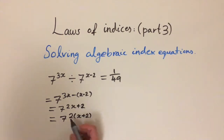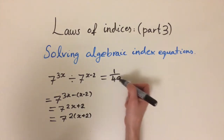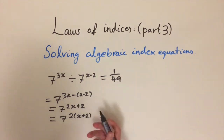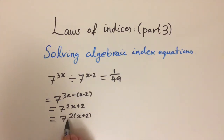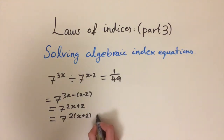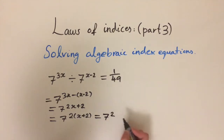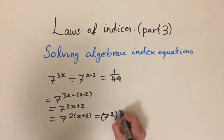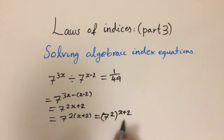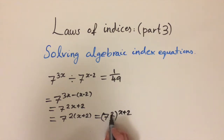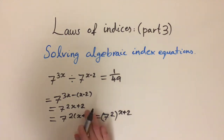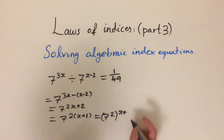We want to get to something that looks like 49, and we can see that 7 squared equals 49. So we use the law of multiplication in reverse: we can write this as 7 squared in brackets raised to the power of x plus 1. Sorry — I made a mistake earlier, the 2 should be a 1, so the exponent is x plus 1.